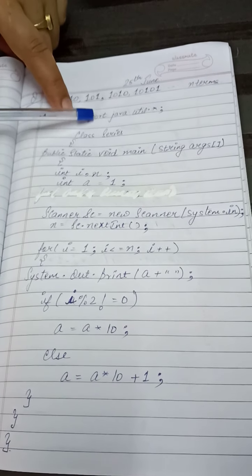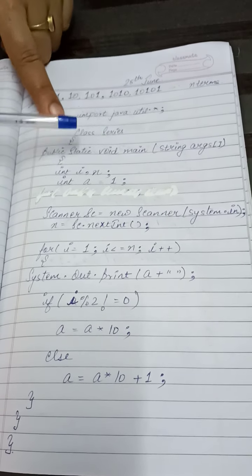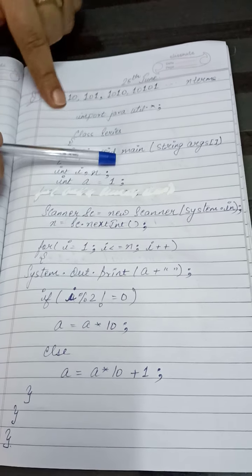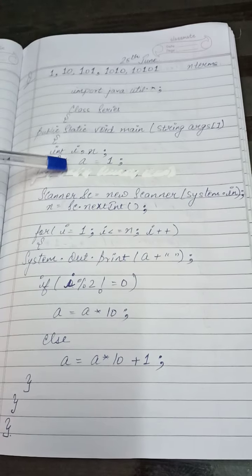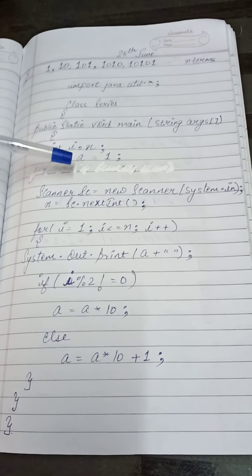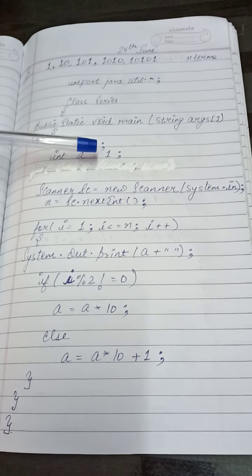Now I have taken mutil package, input, java, mutil.stri. Class name I have taken series, class series, public static, void main and string args. I have taken i, n and I have initialized a is equal to 1.